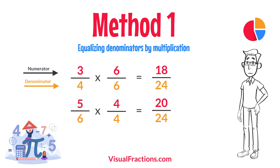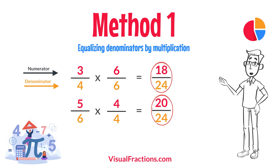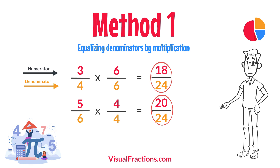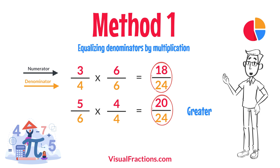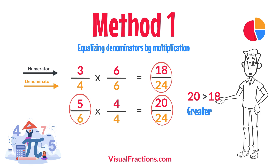Now, with both fractions expressed with a denominator of 24, we can easily compare them. 20 twenty-fourths is greater than 18 twenty-fourths, so 5 sixths is the larger fraction.